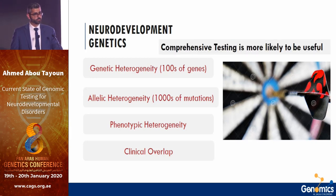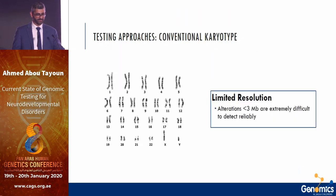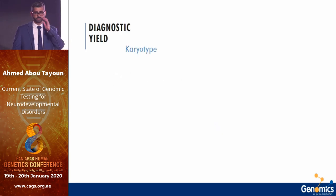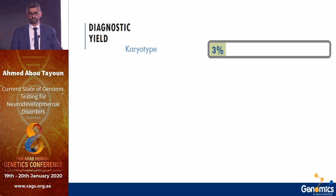In this case, comprehensive testing is most likely to be useful. Historically, the conventional karyotype was used — we all know its limitations. Aberrations less than three to five million bases won't be easily detected. Assuming we're talking about neurodevelopmental disorders with highly suspected genetic etiology, excluding non-chromosomal abnormalities like Down syndrome, the diagnostic yield of karyotype was at best around 3 percent.